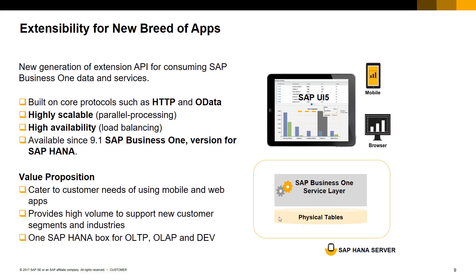So what is the Service Layer? Service Layer is the new extensibility API for consuming SAP Business One data and services. It is based on core protocols such as HTTP and OData. It is highly scalable, designed with parallel processing, and highly available, implementing load balancing. Service Layer is available since SAP Business One version 9.1 for SAP HANA. The goal of the Service Layer is to ease the development of mobile and web applications connecting to SAP Business One data and services, and also provides high volume support for new customer segments and industries.